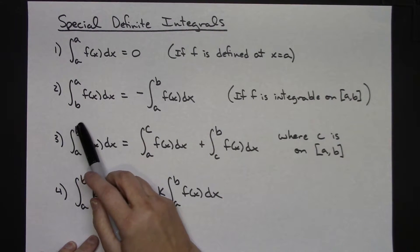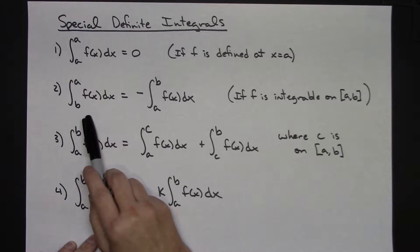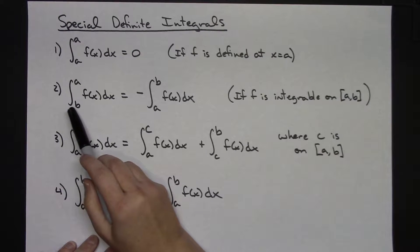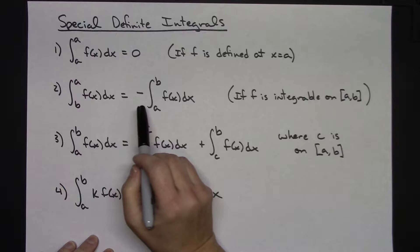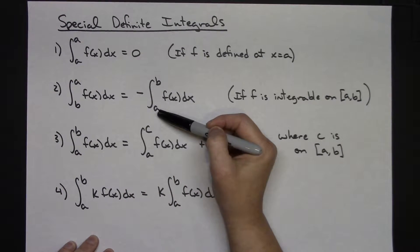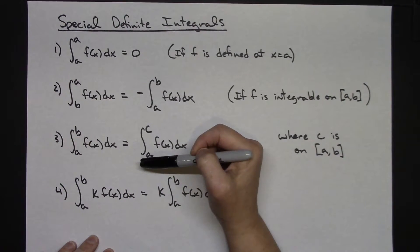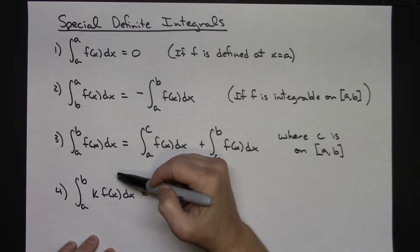Hopefully this also kind of makes sense to you - if I integrate from b to a of f of x dx, I could switch those limits of integration and then it would just be the negative of that, so then those two things should be equal.